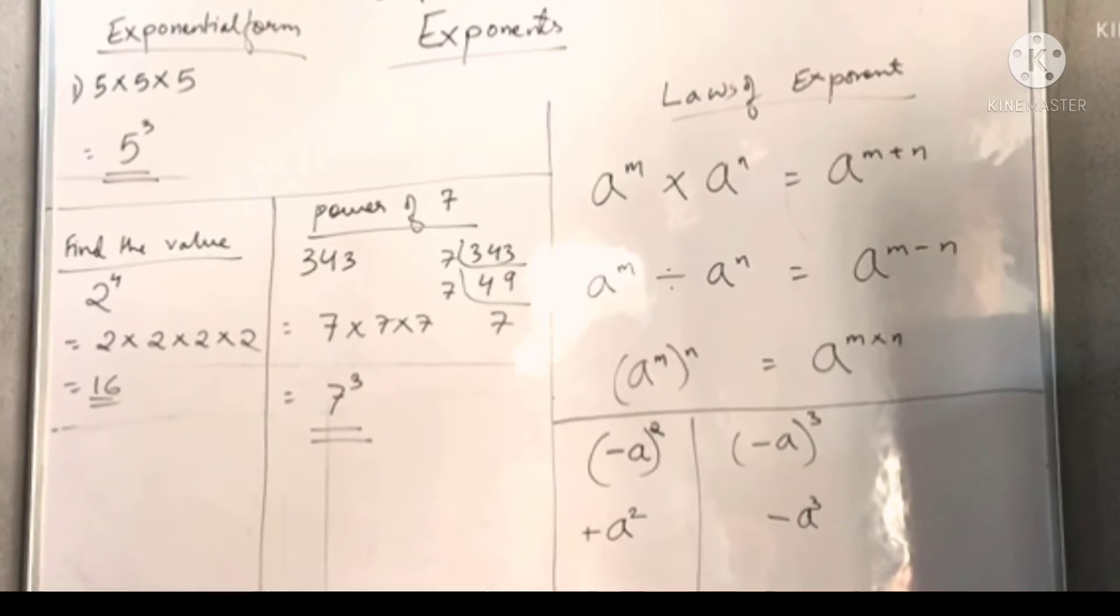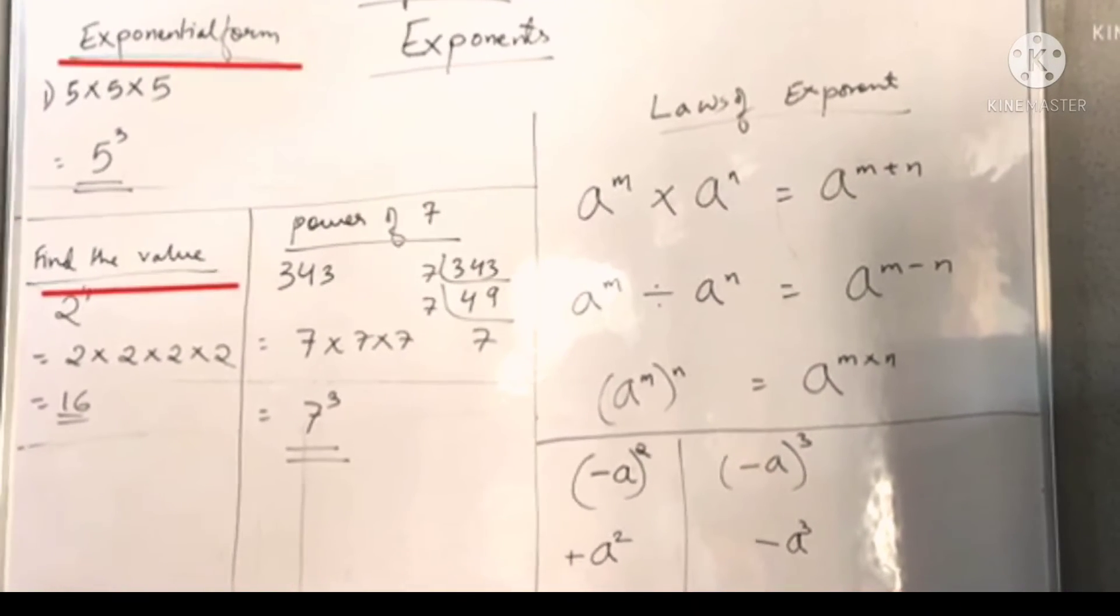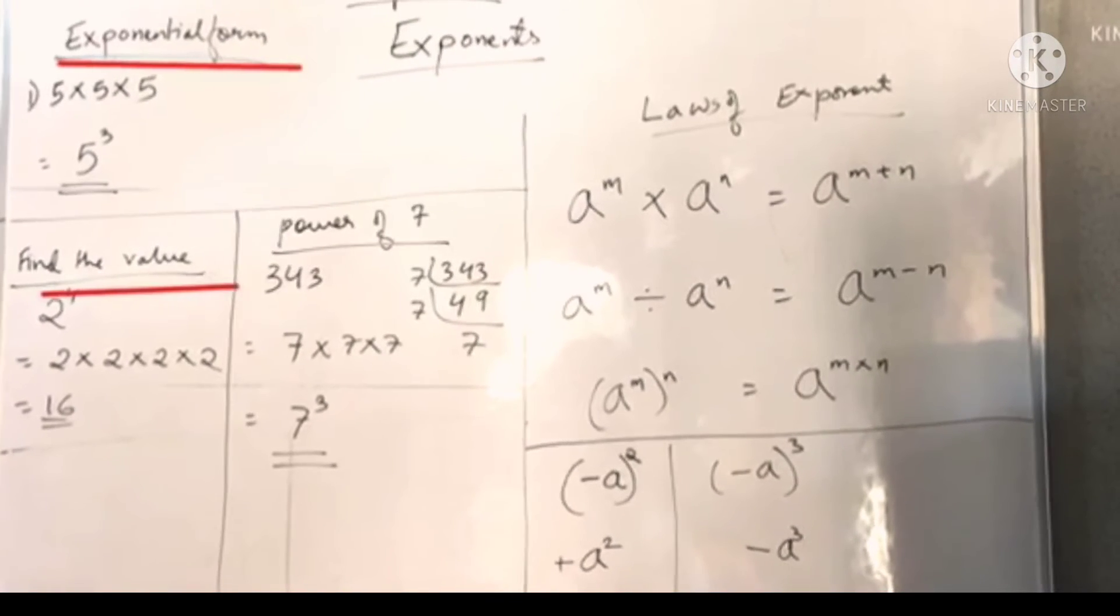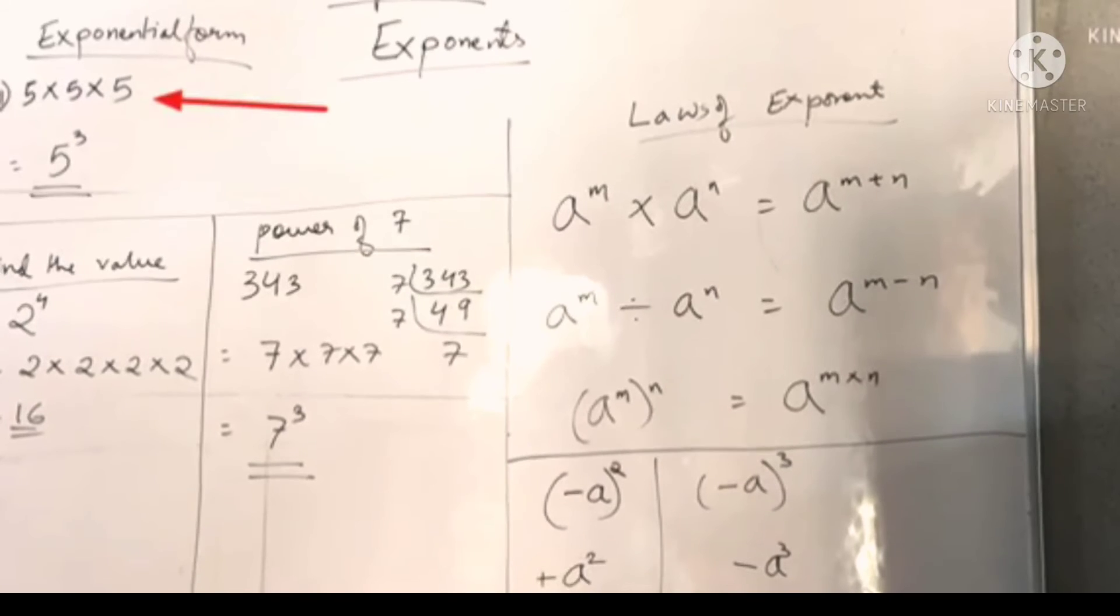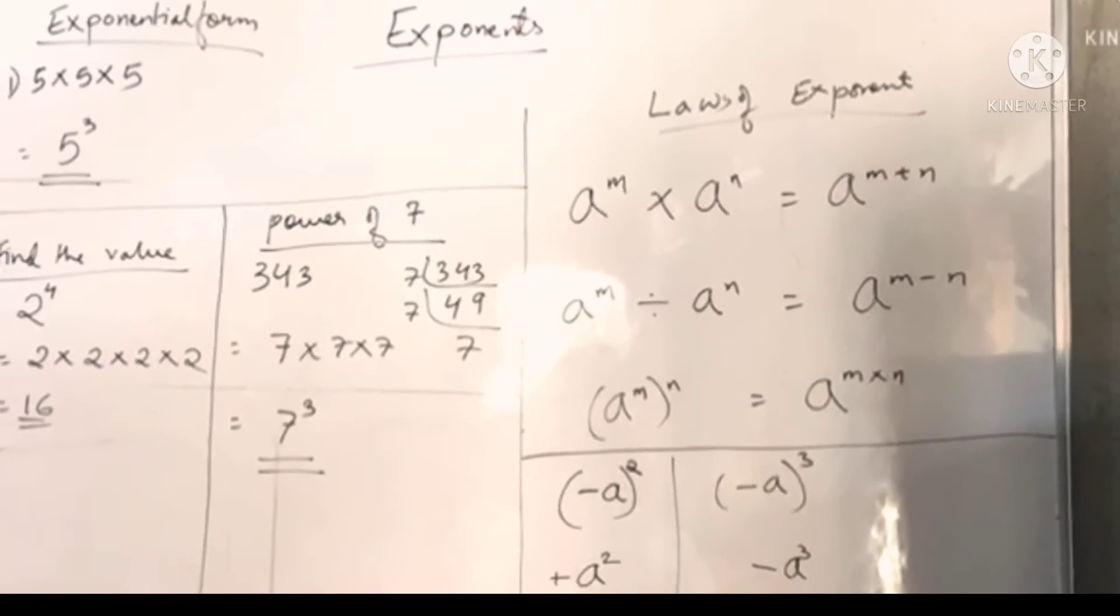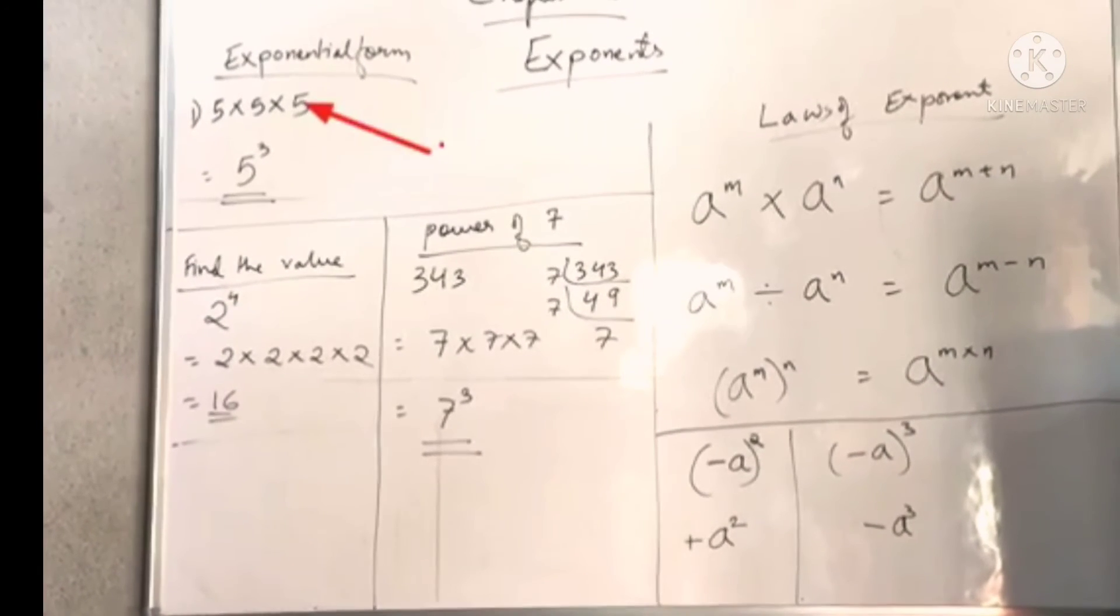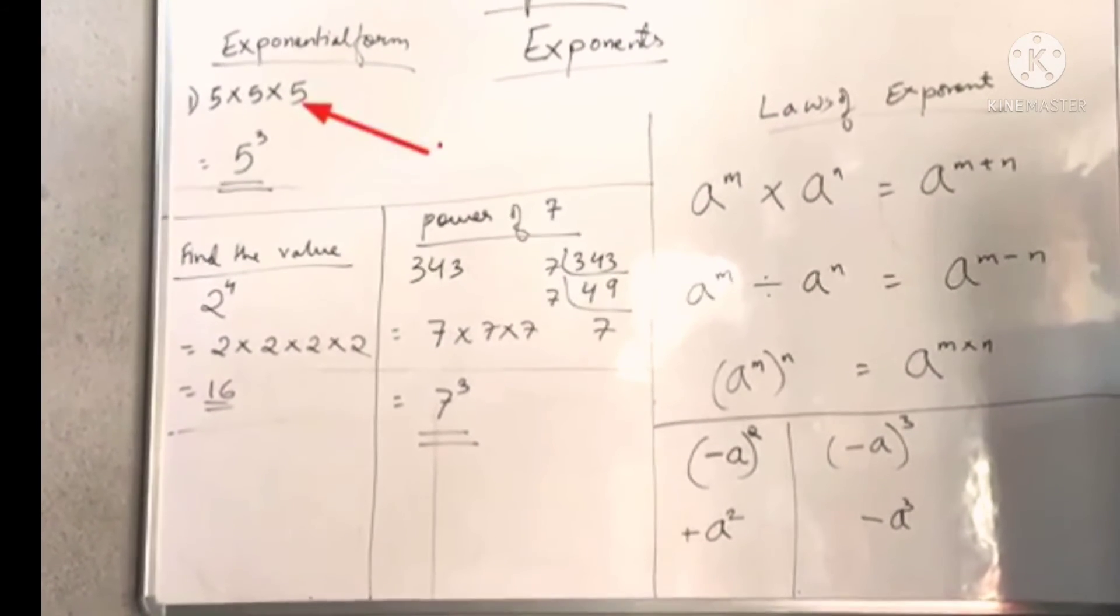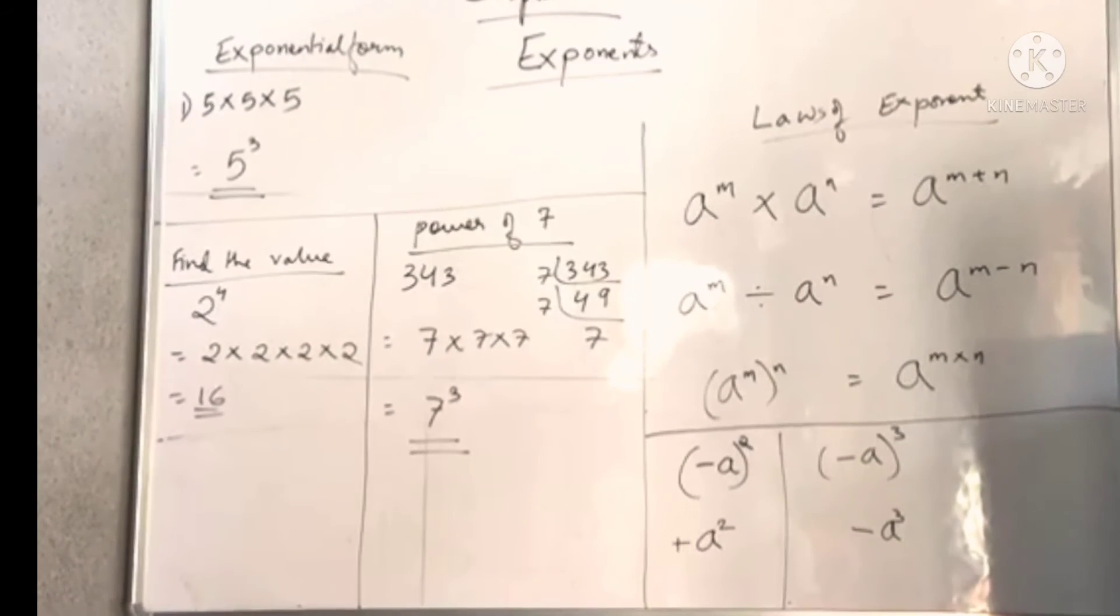Now let's see how to solve a few questions. You need to see if you have to do the exponential form or find the value. Exponential form means if you see any number multiplied repeatedly, we write it in its respective power. You can see five is written three times, so our base is five and the power will be three.